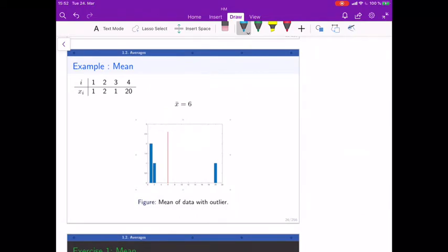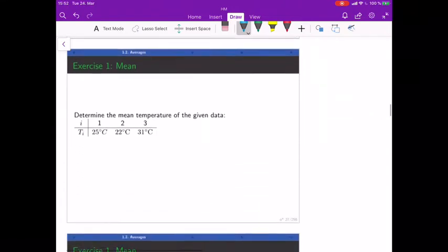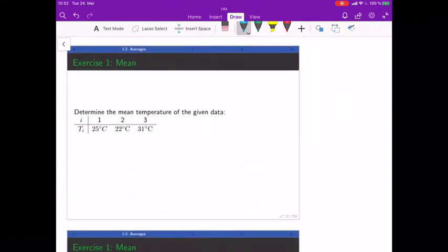is 6, and you can already see what happens when we've got outliers like the 20. It moves our mean value away from the other data points. Here you go: temperatures, please calculate the arithmetic mean.